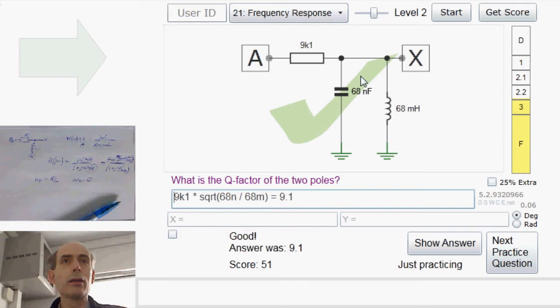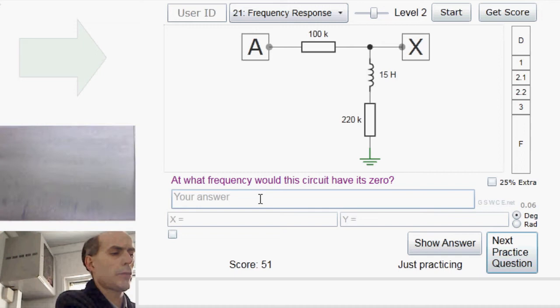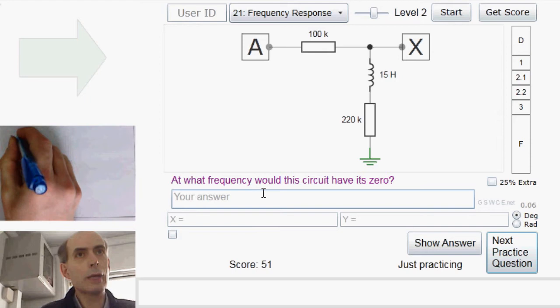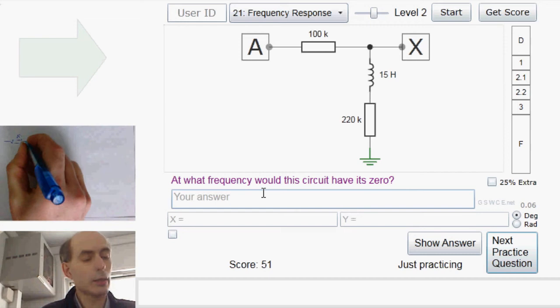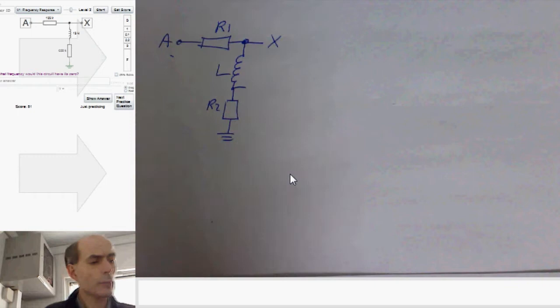Now, at what frequency would this circuit have its zero? That's a little bit more interesting. And again, we have to go back and have a think about potential dividers. Here we have a resistance here, I'll call it R1. And an inductor here, I'll call L. And then another resistance down here, which I'll call R2. And that's the output X, and this is the input A.